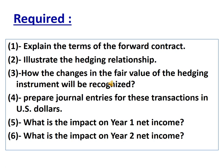Number 1: Explain the terms of the forward contract. Number 2: Restate the hedging relationship. Number 3: How the changes in the fair value of the hedging instrument will be recognized. Number 4: Prepare journal entries for these transactions in U.S. dollars. Number 5: What is the impact on Year 1 net income, and what is the impact on Year 2 net income?